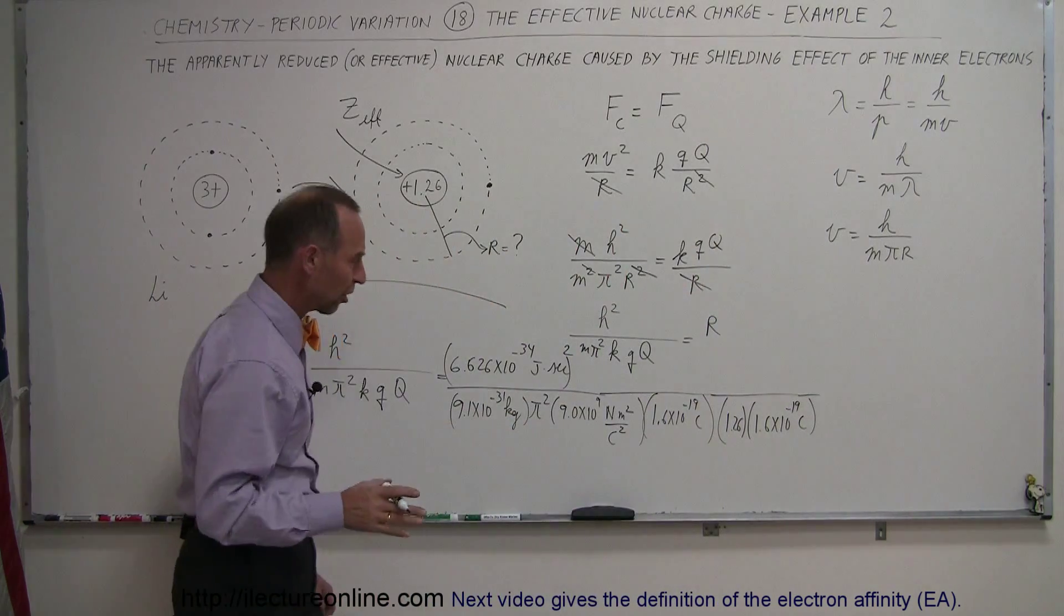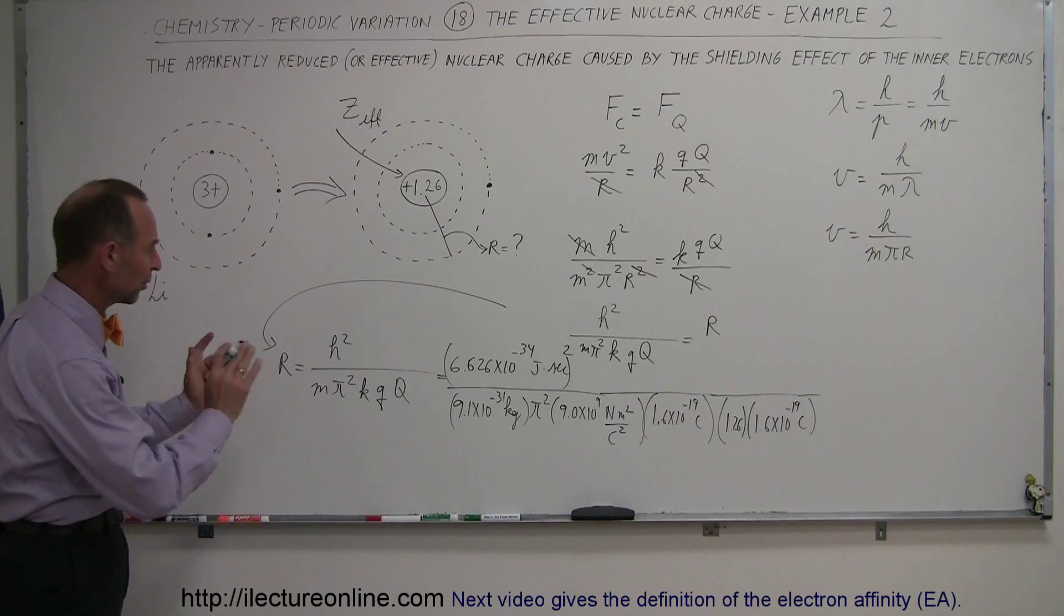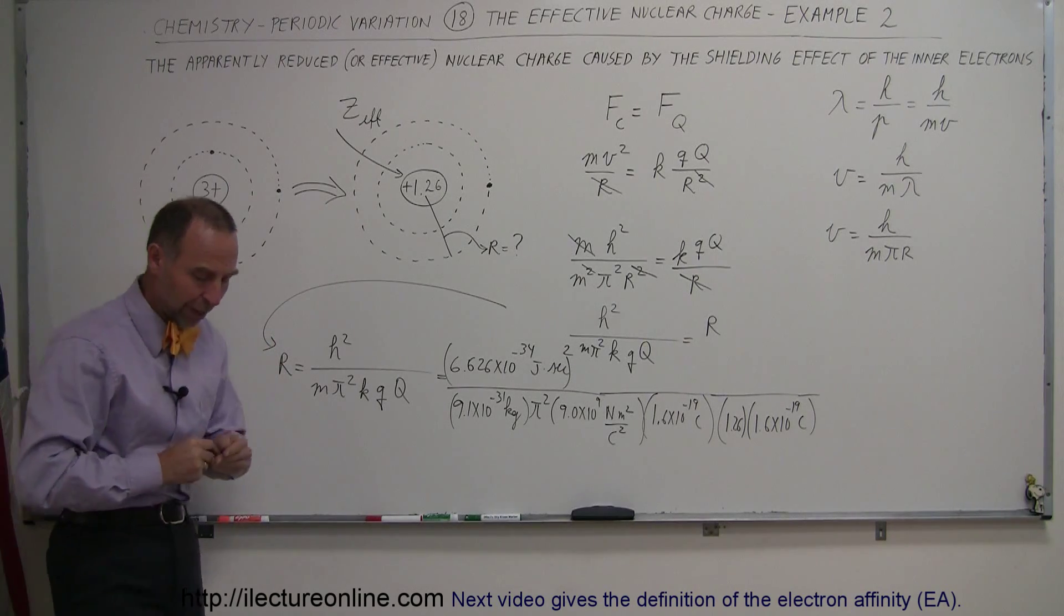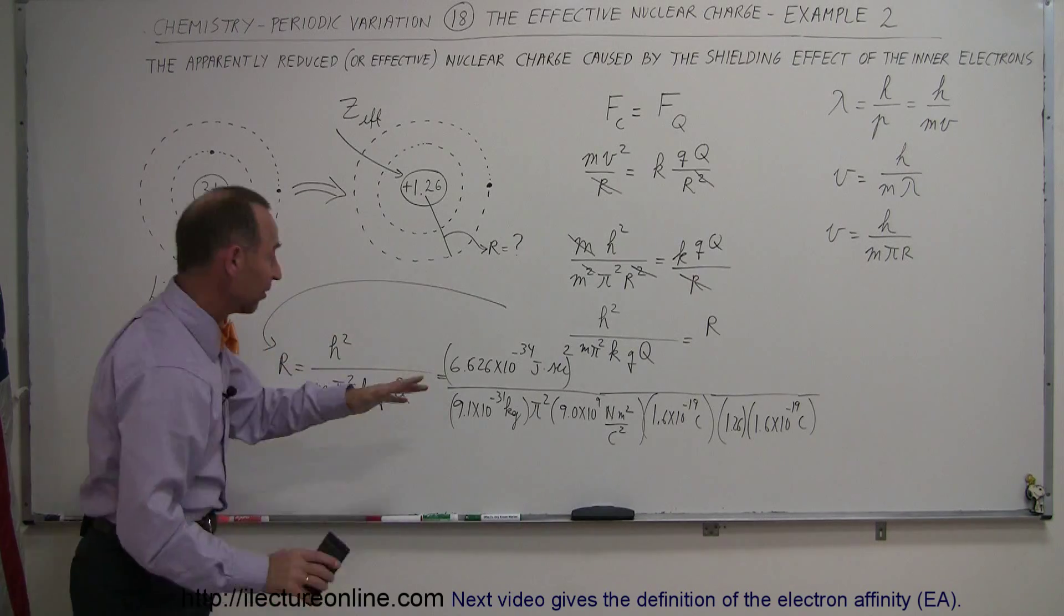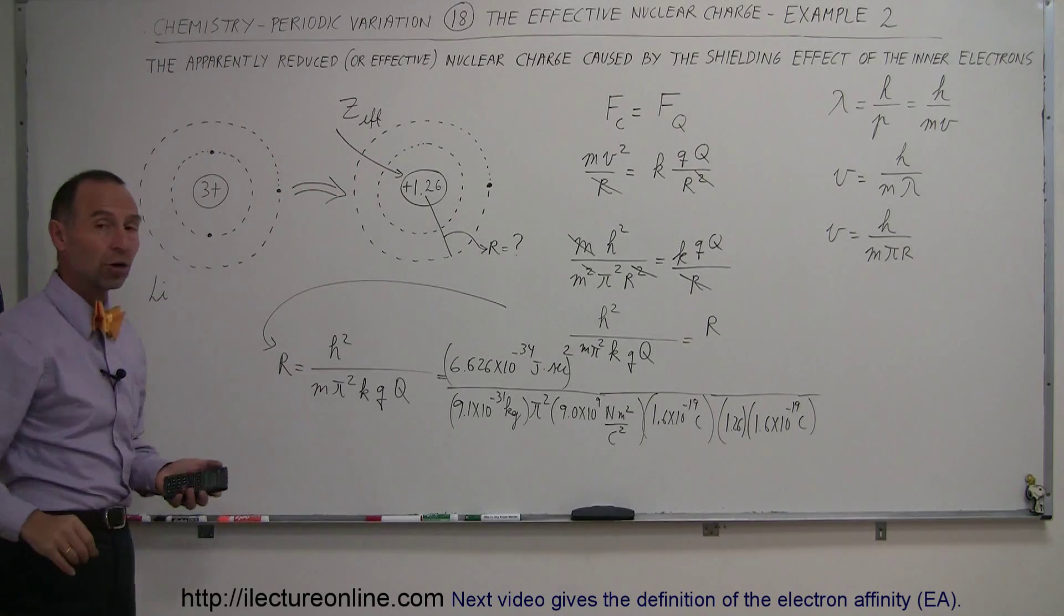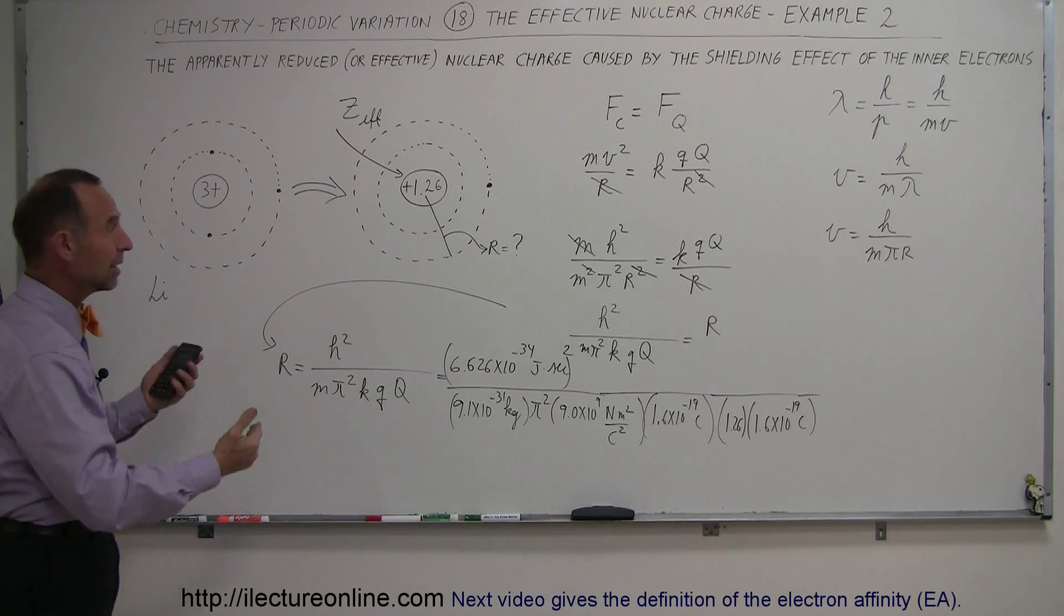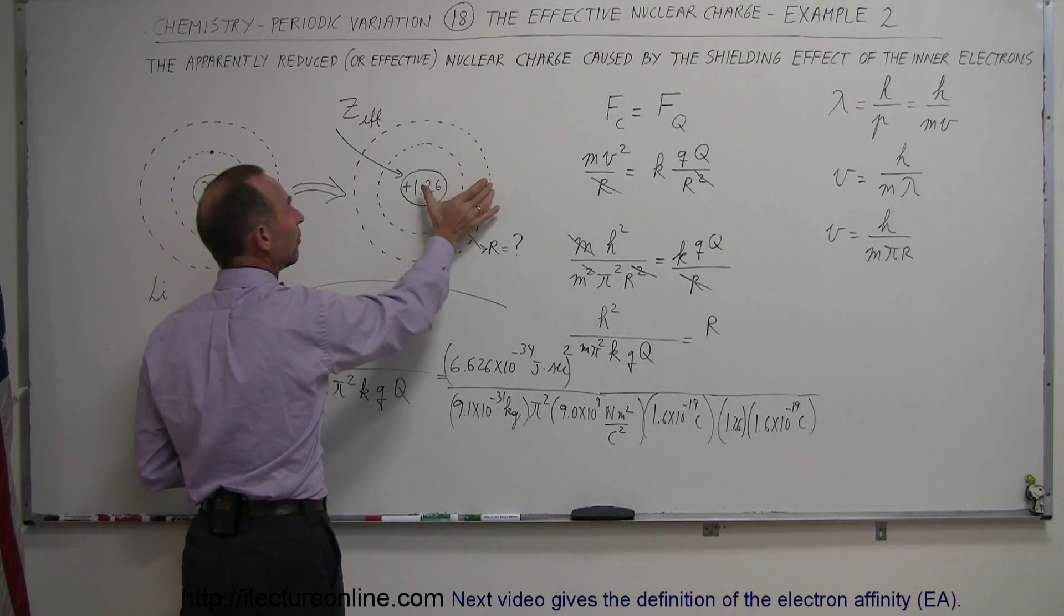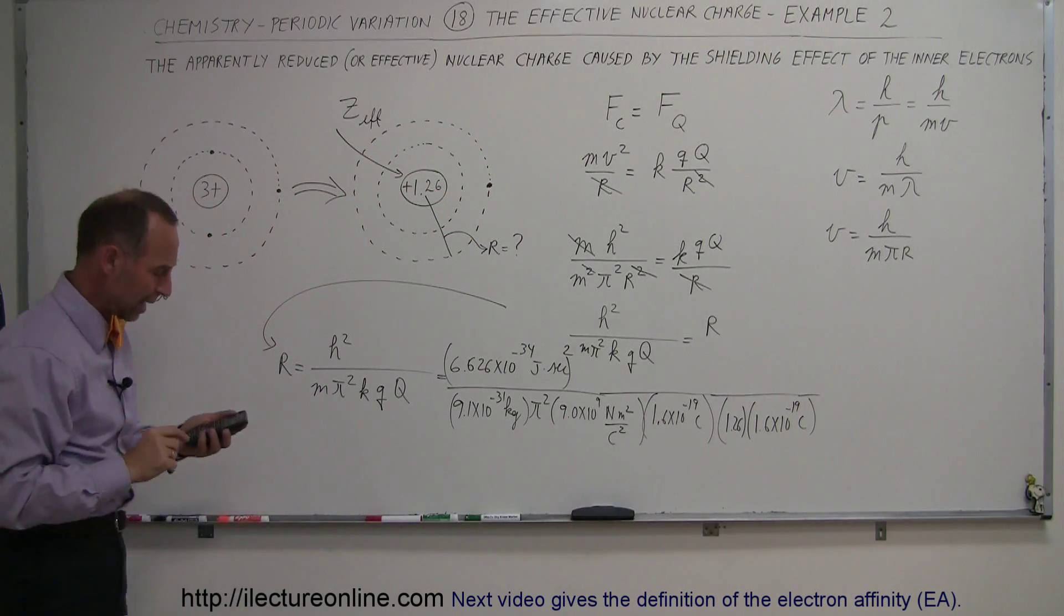I know the electron is a negative charge and the nucleus is a positive charge. We don't care, we simply care about the absolute value of that amount because we're looking for the radius. Now if we work this out, we should be able to get the radius of a lithium atom based upon the effective charge of the nucleus and based upon the principle that the centripetal force has to be equal to the force of attraction between the electron and the nucleus.